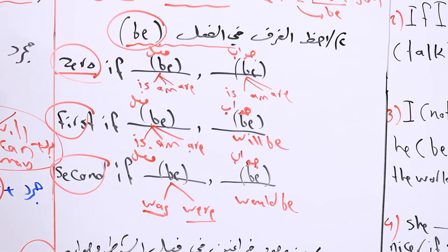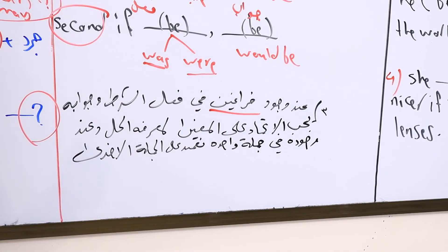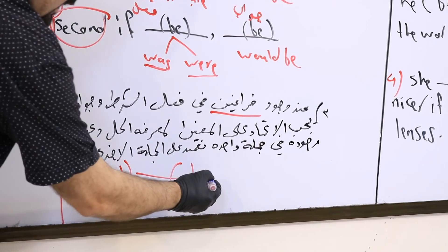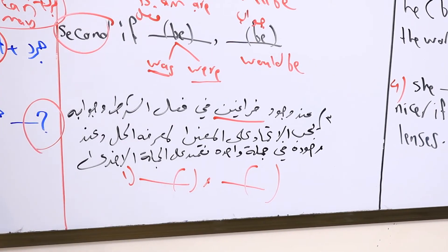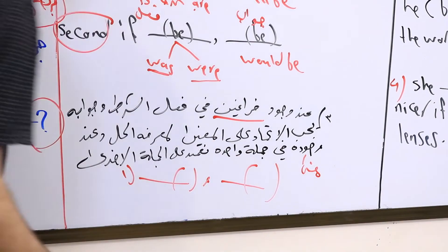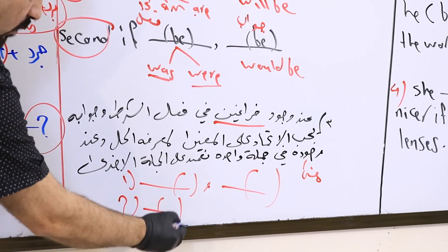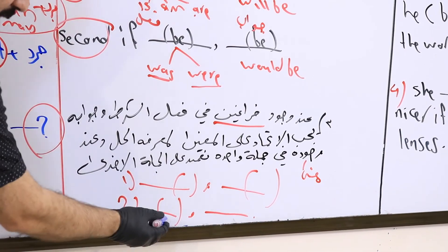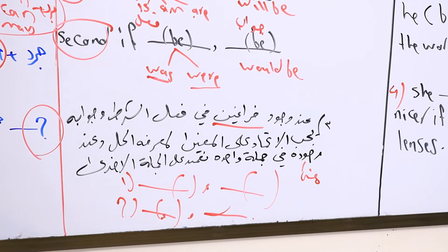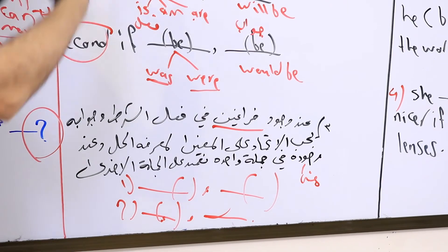Another note: if the exam gives you two blanks, you must rely on meaning. But if you get a blank on one side only, you determine the tense from the other clause. The blank's position tells you which clause to base your answer on.